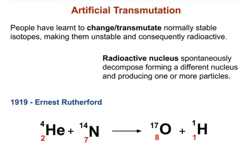Through this experiment, Ernest Rutherford discovered the proton — a positively charged subatomic particle responsible for the positive charge of the nucleus. The symbol for a proton is the letter p with mass number 1 and atomic number 1. Alternatively, the proton is frequently represented as hydrogen-1, since the nucleus of the most common hydrogen isotope is simply a proton.